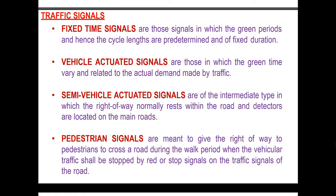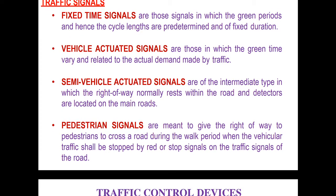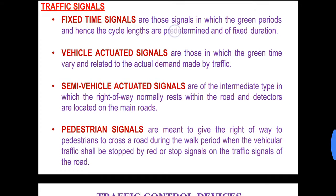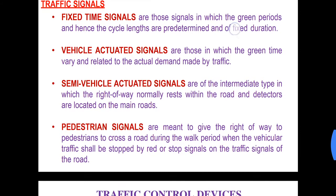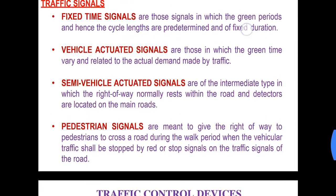Now we will have a look into the traffic signals in depth. Fixed time signals are those signals in which the green periods and hence the cycle lengths are predetermined and of fixed duration. As we know, traffic signals for controlling road users or vehicular traffic use three types of lights: red, green, and amber. Red denotes stop, green denotes go, and amber is for clearance time.